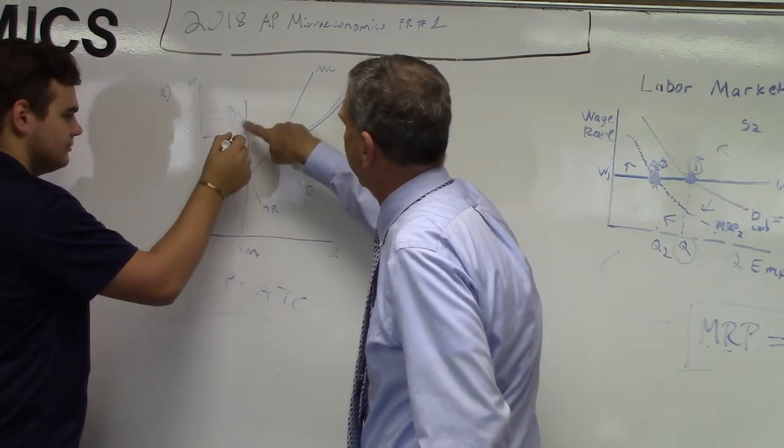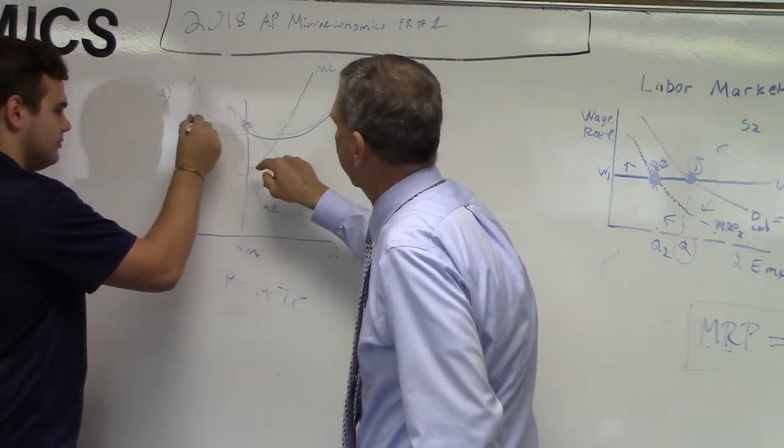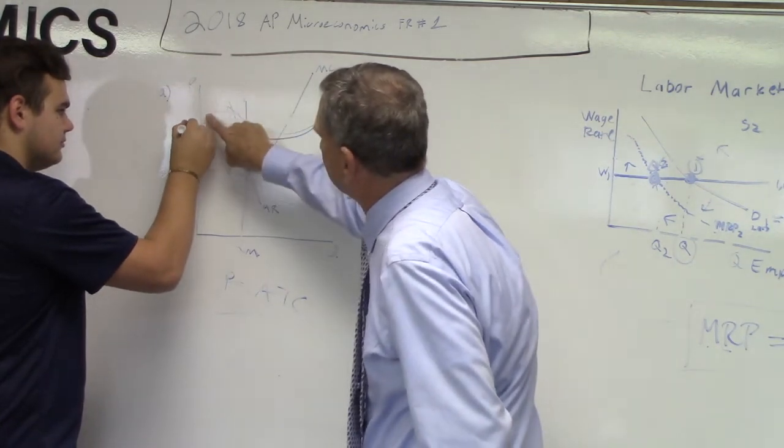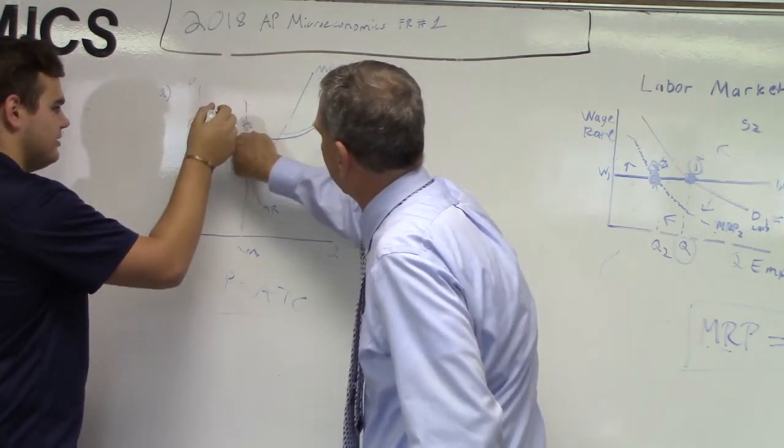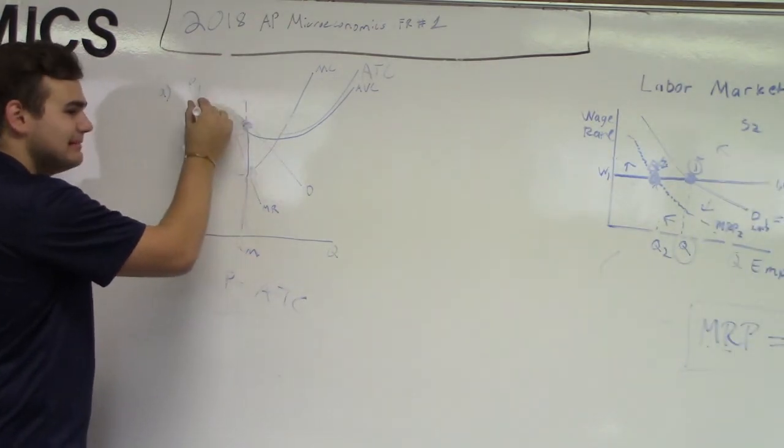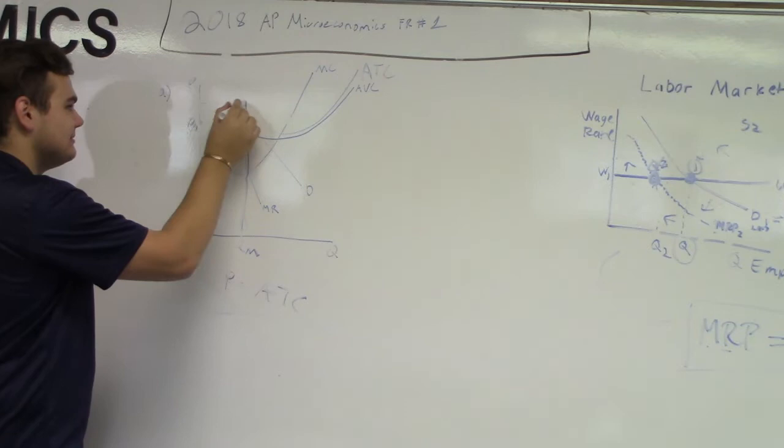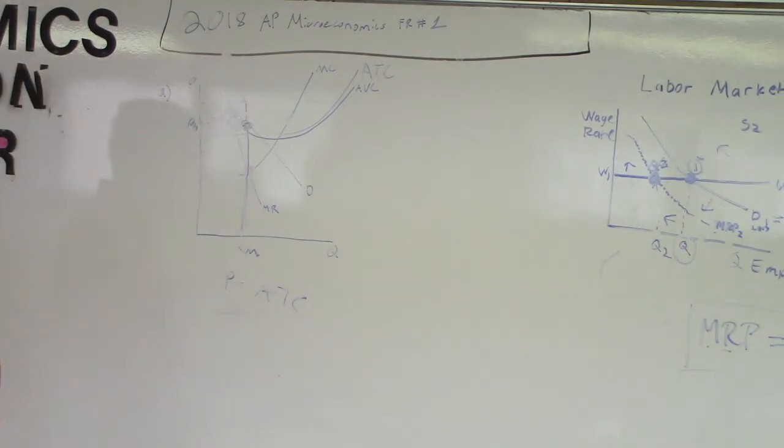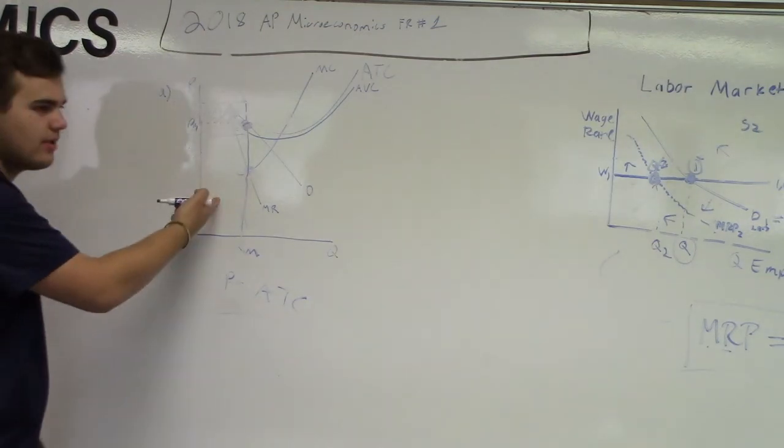Now that's PM. We'll run over to PM. That's the price. Now the price is less than the average total cost. So this is that area right there. Very good. So there's the negative economic profit. So they wanted you to shade it completely. That's the end of question A.